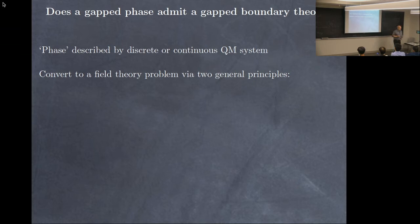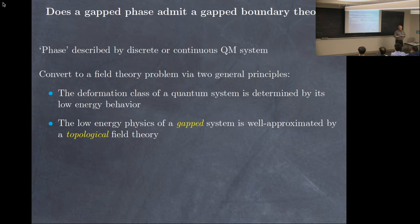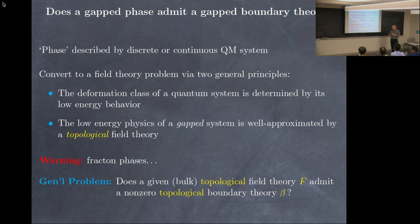I want to move it to a field theory problem, because that's where our techniques lie. There are two general principles, but they're not universally applicable. The first one is that the deformation class, or phase, of a system is determined by its low energy behavior — the high energy, short distance behavior doesn't affect the answer. And the low energy physics, if the system is gapped, can be well approximated by a topological field theory. We'll come back and revisit it. I am aware of fracton phases, but that's not the reason we're going to revisit it.